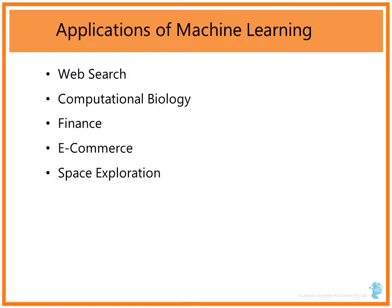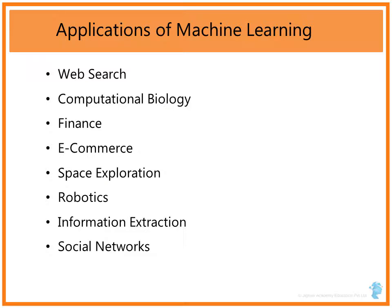Other areas of Machine Learning are Space Exploration and Robotics. Think about the space rover on Mars — all its movements are controlled by Machine Learning algorithms. Information extraction is another very big area of Machine Learning. A new upcoming area is Social Networks. For example, Facebook is now a multi-billion dollar company. When you are on a Facebook page, you see advertisements for certain types of ads or banners, and in that case Machine Learning has been used.